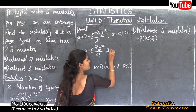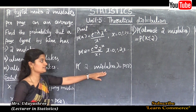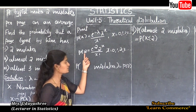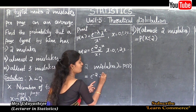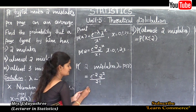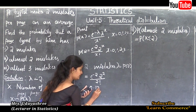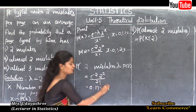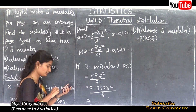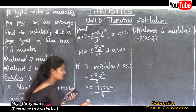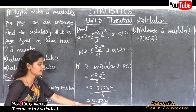For the first sub-question, the probability of two mistakes is P(2). Substituting x = 2: P(2) = e to the power minus 2, times 2 to the power 2, divided by 2 factorial. This equals 0.1353 times 4 divided by 2, which equals 0.1353 times 2, giving 0.2706. So the probability of exactly two mistakes is 0.2706.